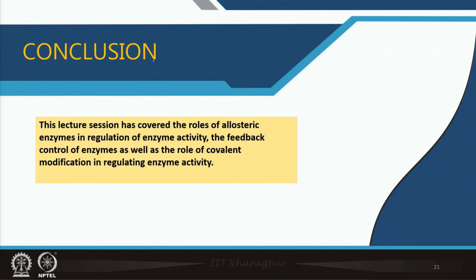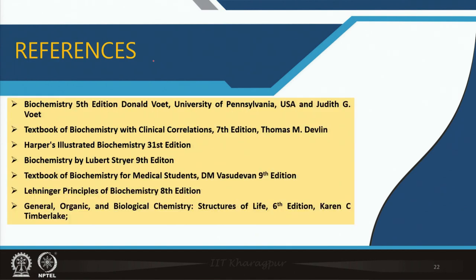To conclude: this lecture has covered the role of allosteric enzymes and how they are regulated, feedback inhibition and end product inhibition, how covalent modification helps in regulation of enzyme activity, and how hormones play a crucial role in covalent modification. Thank you for your attention.